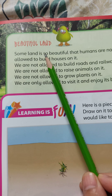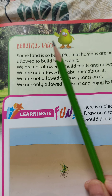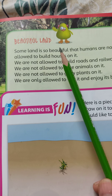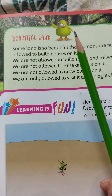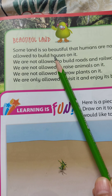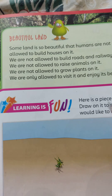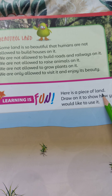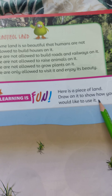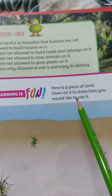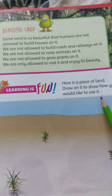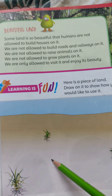For example, in our country, the northern areas are so beautiful. Now here is a piece of land — draw on it to show how you would like to use it. This is your activity: draw how you use the land.